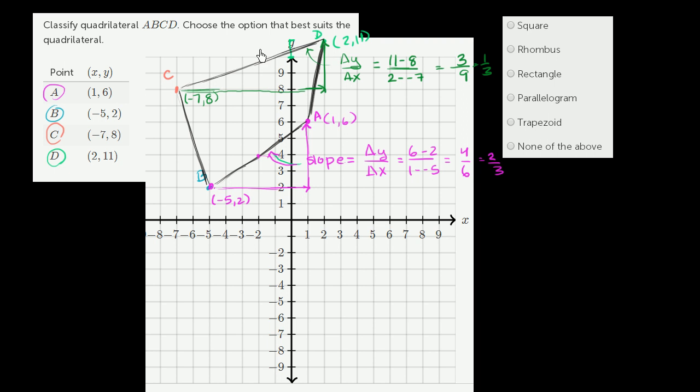So none of these lines are parallel to each other. So this isn't even a parallelogram. This isn't even a trapezoid. Parallelogram, you have to have two pairs of parallel sides. Trapezoid, you have to have one pair of parallel sides. This isn't the case for any of these, or none of these sides are parallel. So we would go with none of the above.